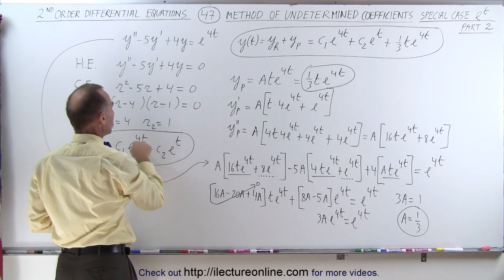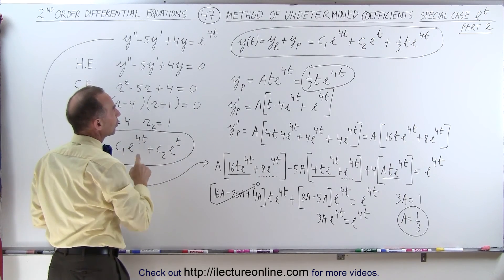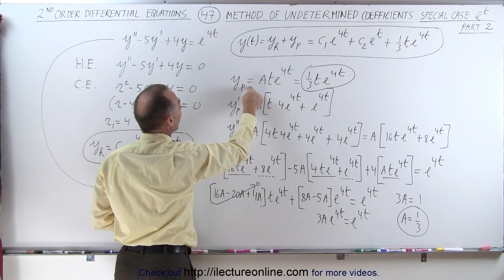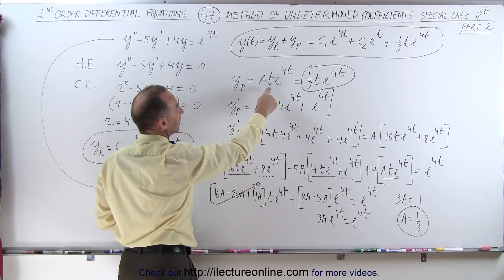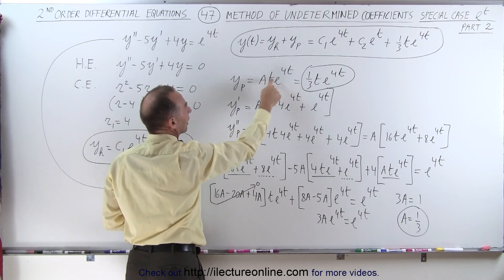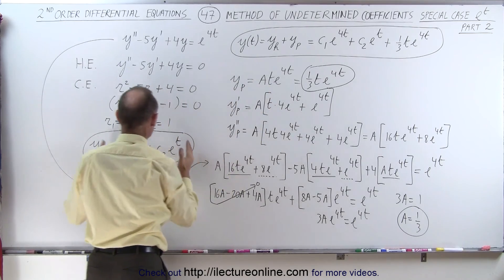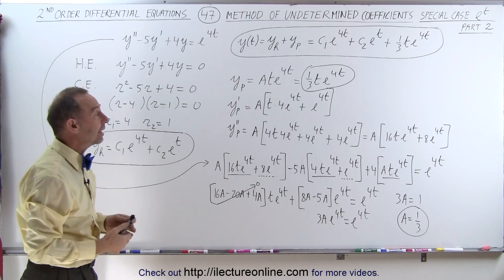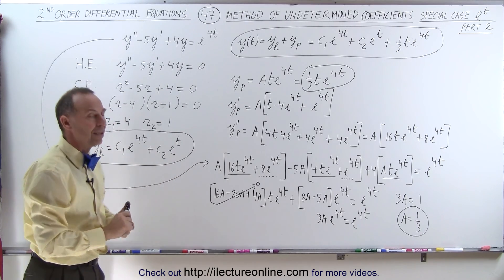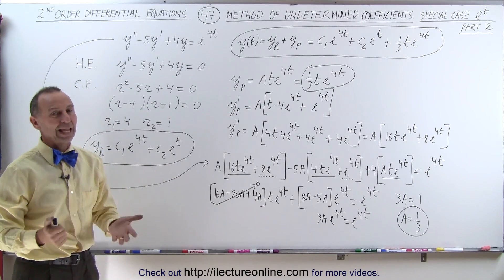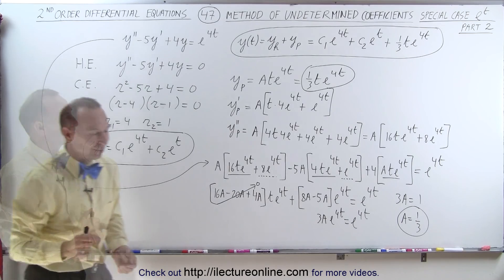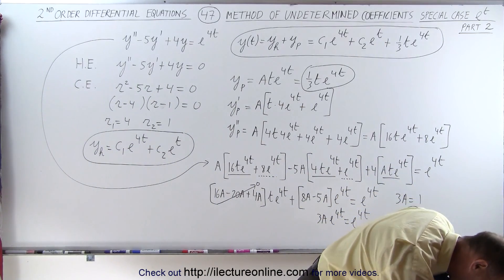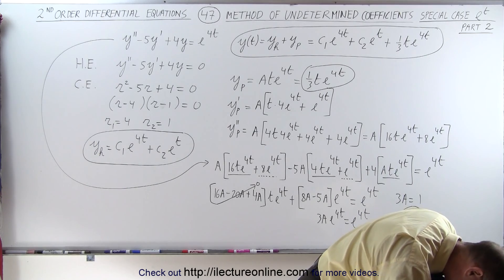The general solution becomes c₁·e^(4t) plus c₂·e^t (the homogeneous part) plus (1/3)·t·e^(4t) (the particular part). Now you know the trick: if the exponent in the forcing function is the same as one of the exponents in the homogeneous solution, you must find a different form for the particular solution — multiply A·e^(4t) by t, and if that also appears in the homogeneous solution, multiply by t squared, and so on, until you can find the undetermined coefficient.